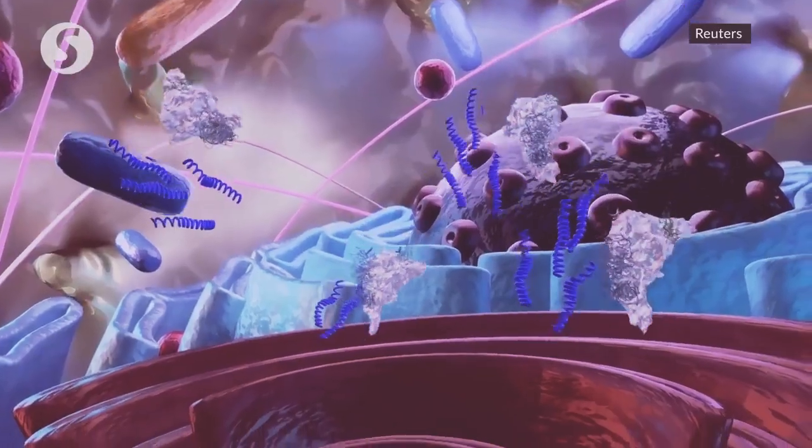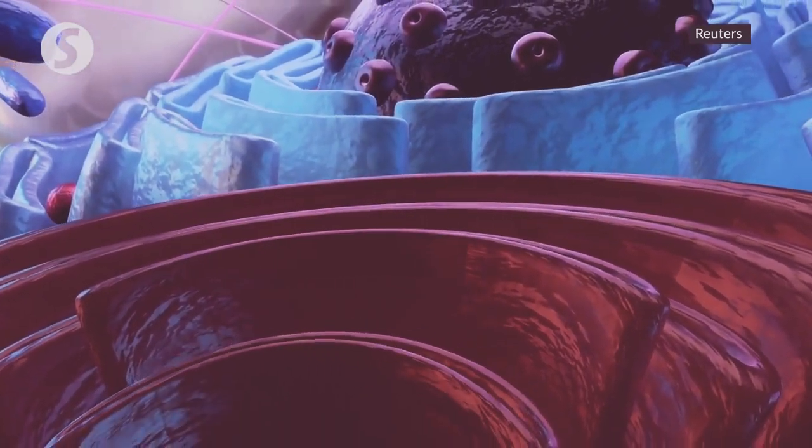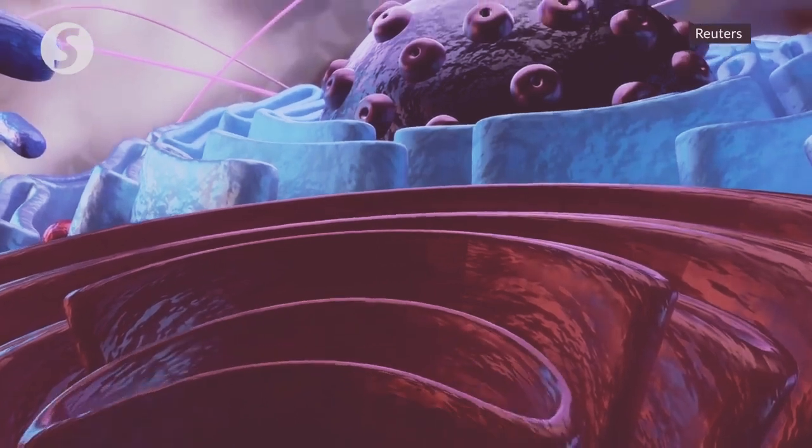According to the Society for Immunology, the hijacked cell's Golgi bodies then package viral RNA and proteins in a viral protein shell.